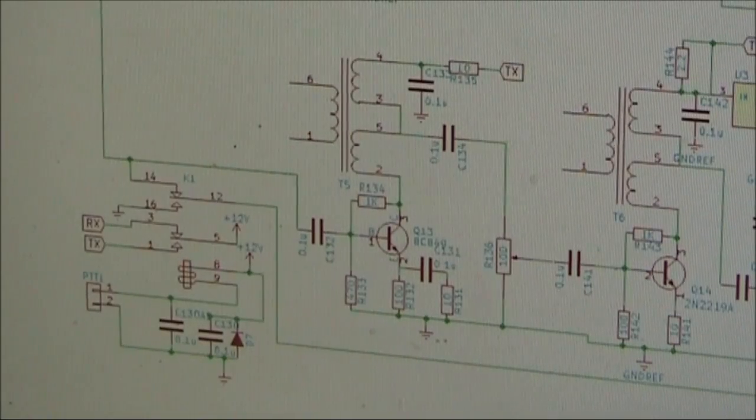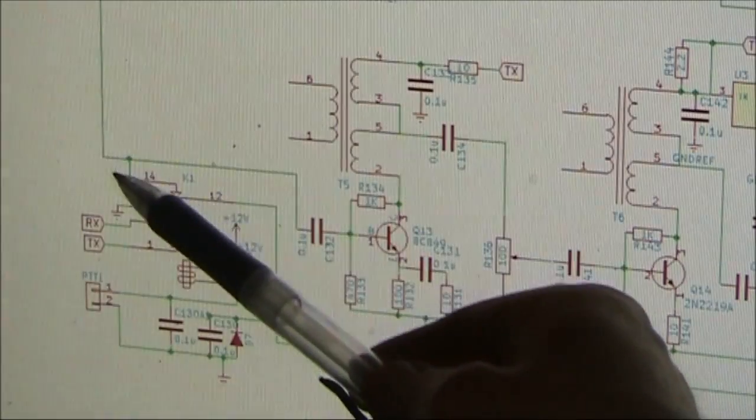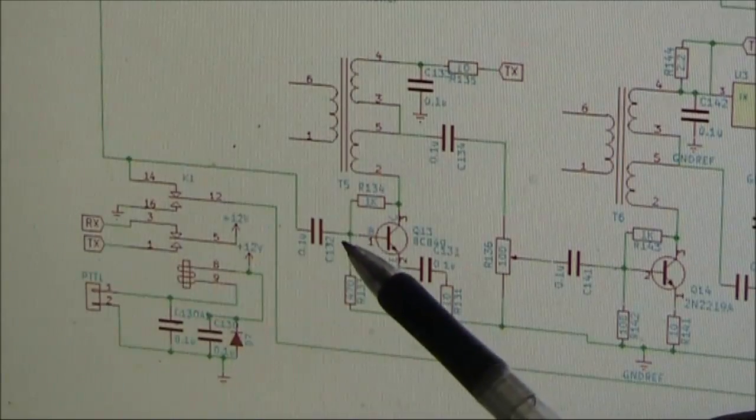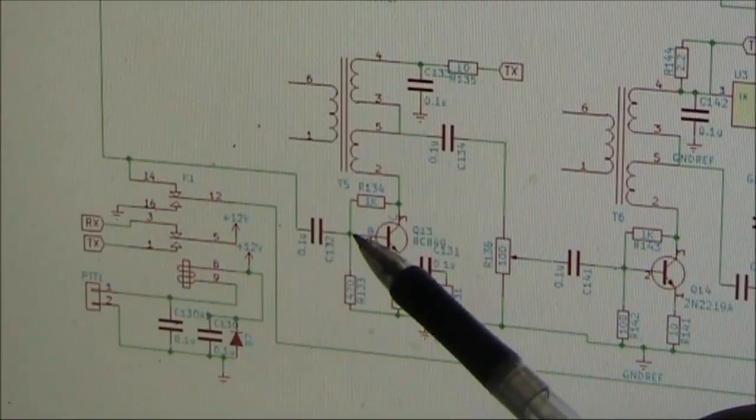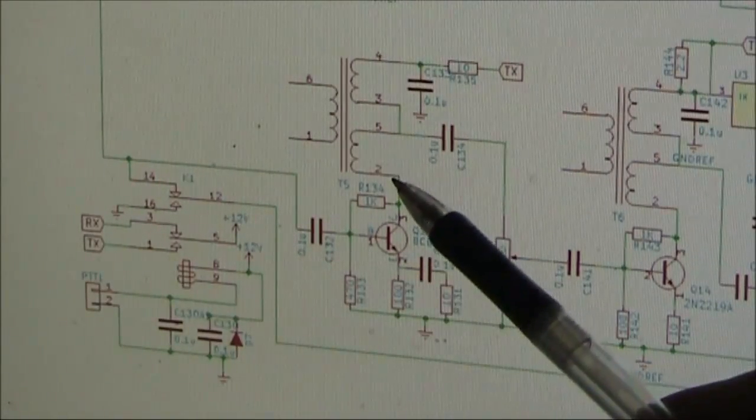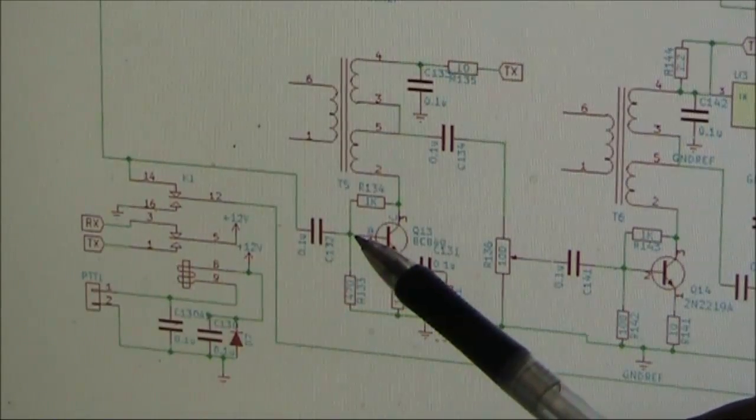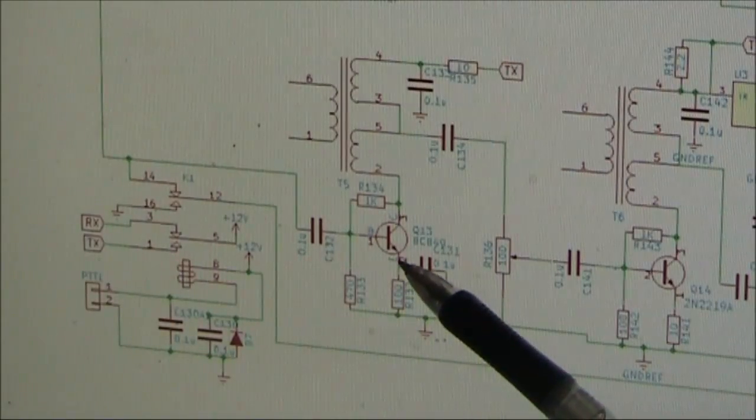Just to put these voltages into context, this is Q13. This is the signal that comes through from the bandpass filter. The faulty unit was reading 1 volt on both the base and the emitter. The collector was as normal, around 12 volts, whereas the good unit was 3.7 volts on the base and 3.1 volts on the emitter.